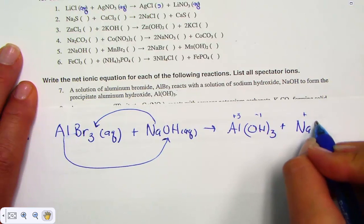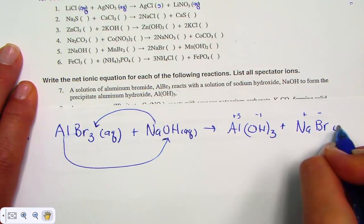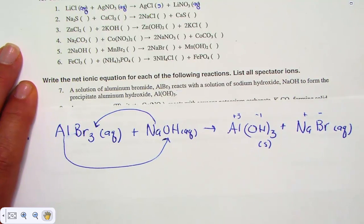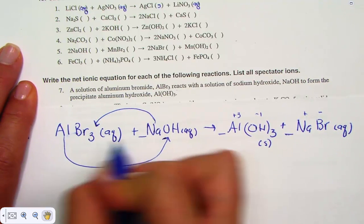We have a plus one, minus one, and that is aqueous. This is our solid. Sodium bromide remains aqueous. This will need coefficients when we balance.